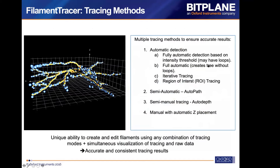For automatic detection, we have the tree-without-loop algorithm called AutoPath, and also the intensity-based threshold algorithm for samples with loops. For semi-automatic tracing we can use the AutoPath algorithm or AutoDepth algorithm, and there is also fully manual tracing available.